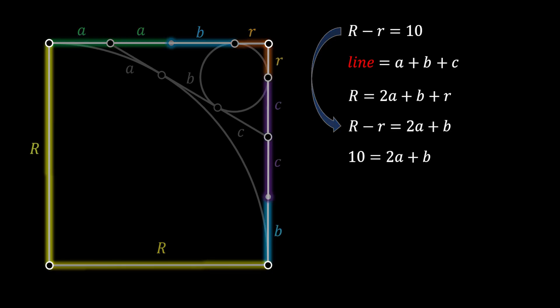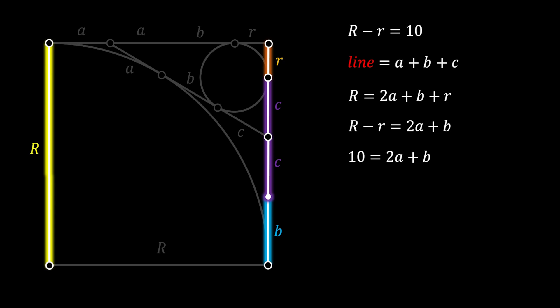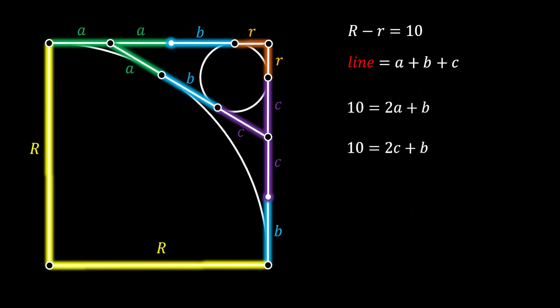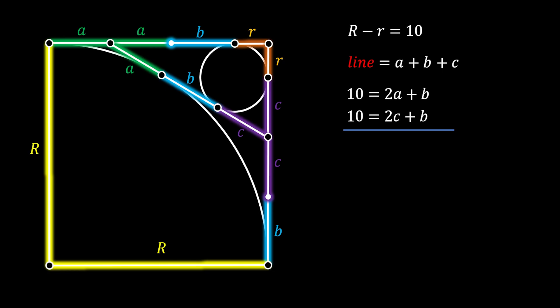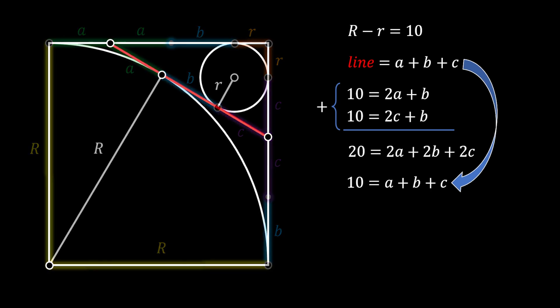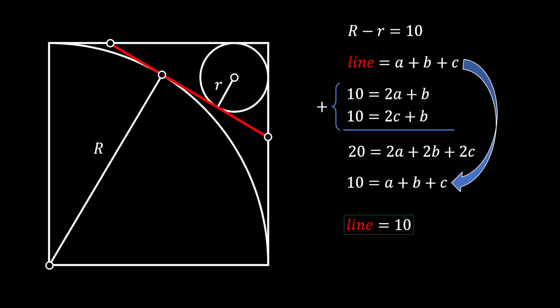From the vertical sides of the square, capital R equals r plus 2C plus B, which again gives us the difference between the two radii equal to 10. So 10 equals 2C plus B. Adding these two equations together: 20 equals 2A plus 2B plus 2C. Dividing by 2 gives 10 equals A plus B plus C. Since the red tangent line equals A plus B plus C, the red tangent line is equal to 10. That is our solution.